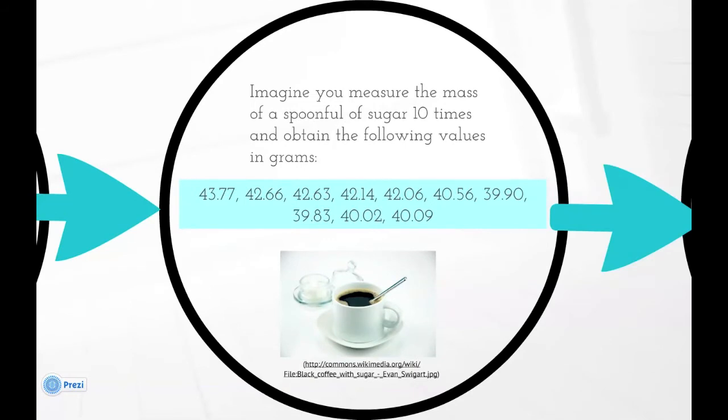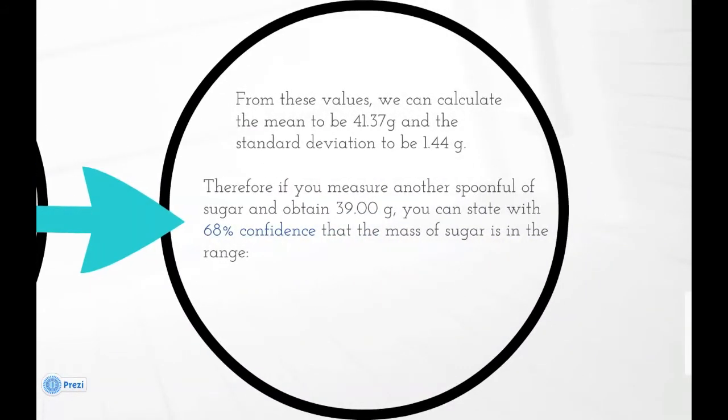Imagine you measure the mass of a spoonful of sugar 10 times and obtain the following values in grams. From these values, we can calculate the mean to be 41.37 grams and a standard deviation to be 1.44 grams.